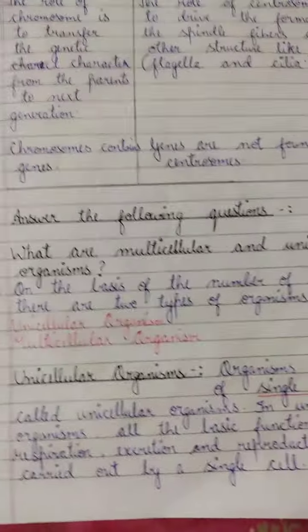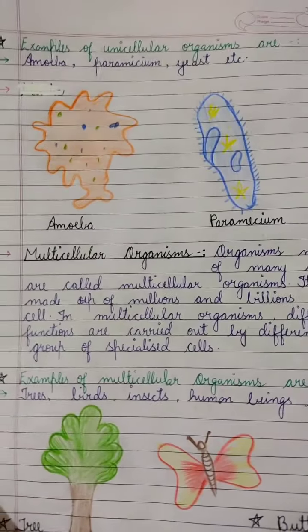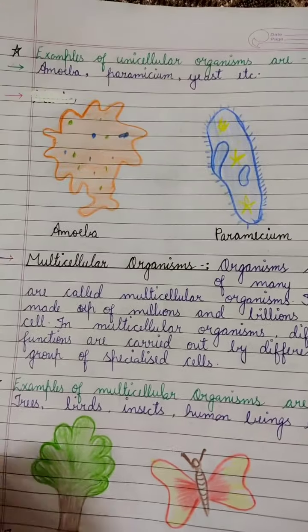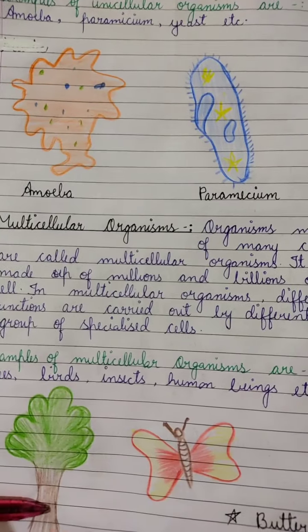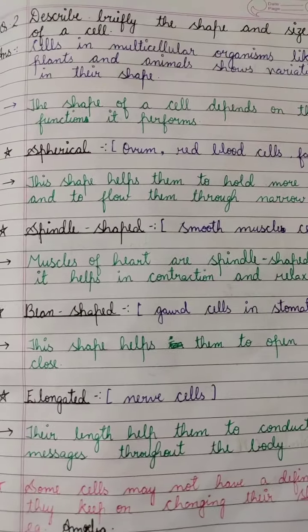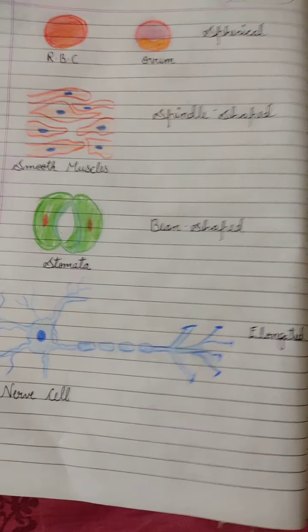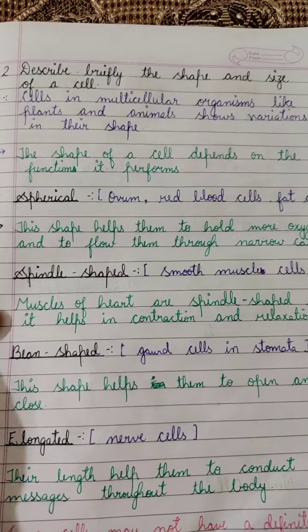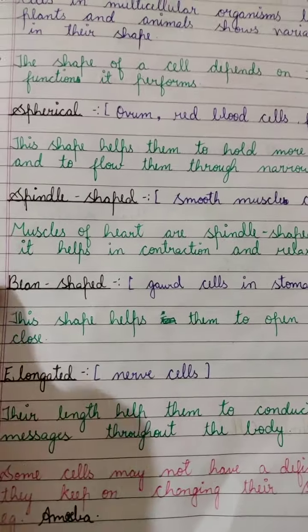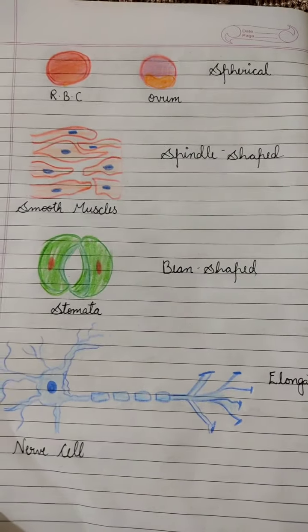All the rest of the questions we will write in the copy. You will use only blue and black gel pen. All the diagrams you will draw on the blank sheet in front of that topic only. In front of unicellular organisms you have to make amoeba and paramecium. In front of multicellular organisms you have to make that diagram. All these cell shapes — spherical, spindle shape, bean shape, elongated — you have to draw these diagrams in front of answer number 2. Where spherical is written draw the spherical diagram, spindle shape draw the spindle diagram, bean shape draw the bean shape diagram, and for elongated you have to draw the nerve cell. All these diagrams you will draw in front of answer number 2.